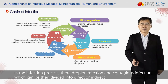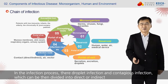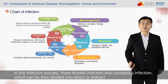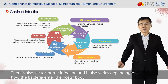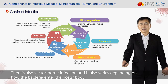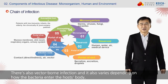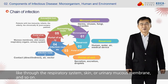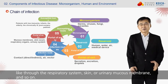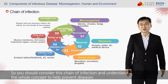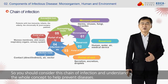In the infection process, there are droplet infection and contact infection, which can be divided into direct or indirect. There is also vector-borne infection, and it varies depending on how the bacteria enters the host body — like through the respiratory system, skin, or urinary mucous membrane. You should consider this chain of infection and understand the whole concept to help prevent diseases.